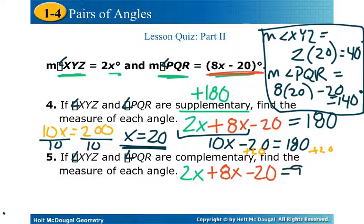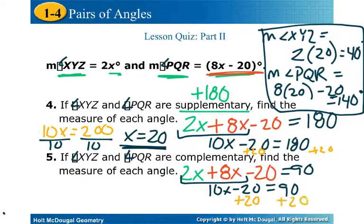We'll say that they're equal to 90 this time. Same operations. We're going to combine our X's and end up with 10x minus 20. But now when we add 20, we're going to end up with 10x equal to 110 instead. Divide by that 10 and we're going to get an x of 11.